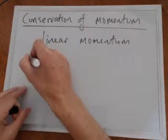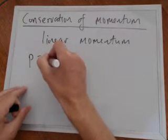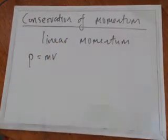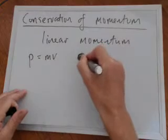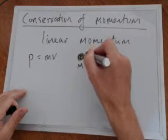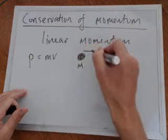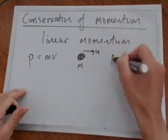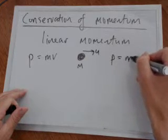So linear momentum. Now momentum P, which equals mass times velocity of something. So here we've got an object, mass M, moving with velocity U, which gives it a momentum equal to MU.